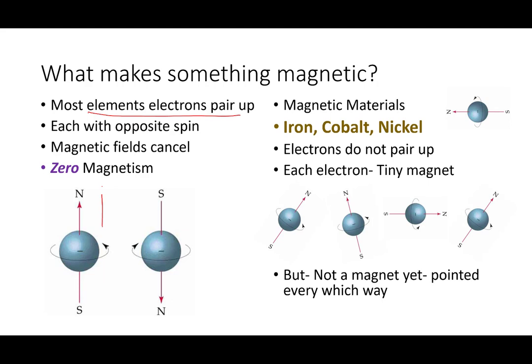Most of the time, most of the electrons inside of matter, you have an electron that's spinning one way like clockwise and another electron that's spinning another way like counterclockwise. That combination of two spinning electrons produces a net zero magnetic field. The two actually cancel each other.